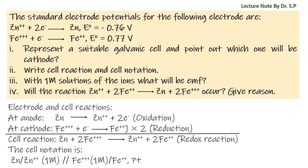At anode, zinc is oxidized to zinc cation. At cathode, the reduction of Fe³⁺ takes place. The overall reaction is a redox reaction. Here, platinum is used as salt bridge between anode and cathode, and the cell notation is written as shown on the screen.